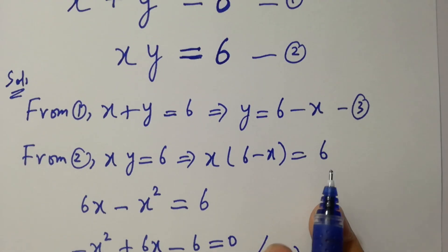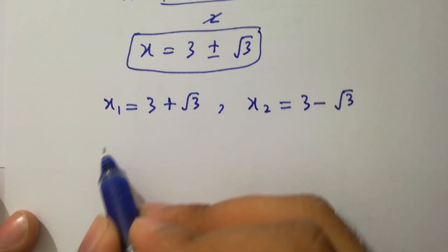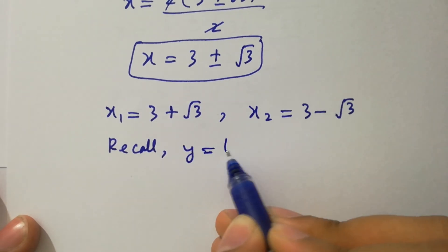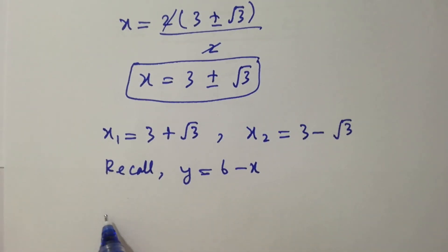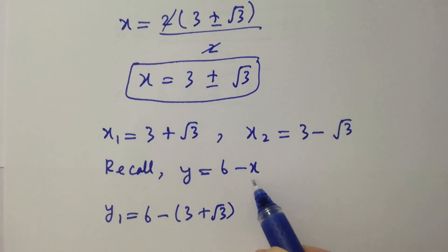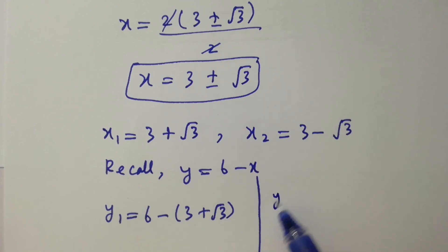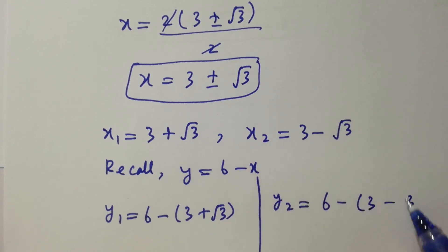Recall the third equation y equals 6 minus x to find the value of y. For y₁, substitute x₁: y₁ equals 6 minus (3 plus root 3). For y₂, substitute x₂: y₂ equals 6 minus (3 minus root 3).